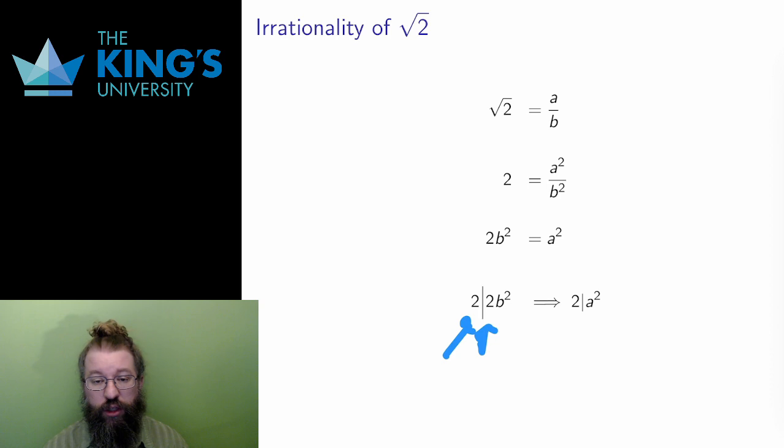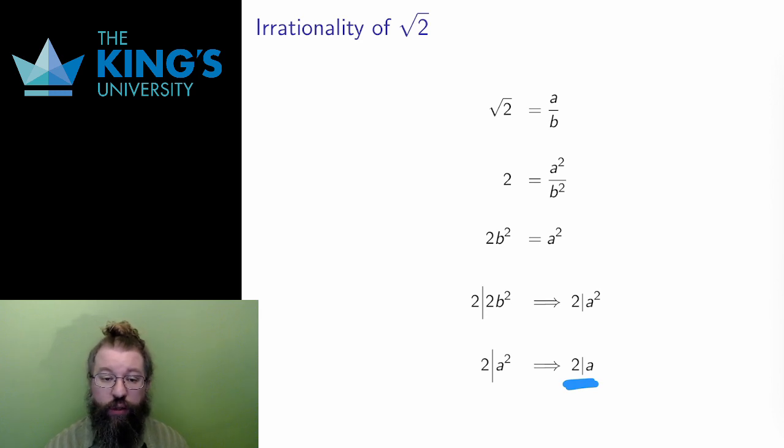If the left side is even, divisible by 2, then the right side must be as well. The sides are equal after all. Now, if 2 is a factor of a squared, then 2 must be a factor of a. If you square an even number, it's still even. And if you square an odd number, it is still odd. The only way that a squared is even is if a is even.